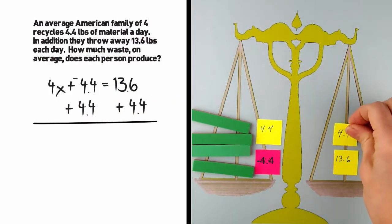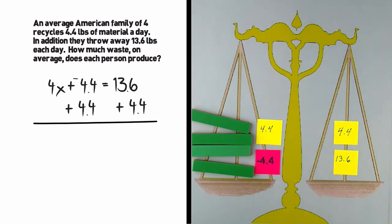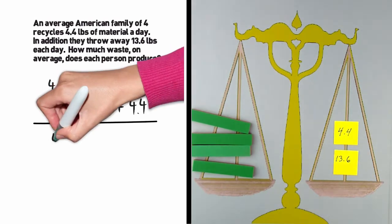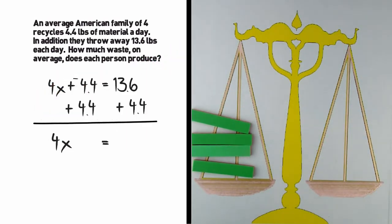And because we want to keep the scale balanced, we will be adding it to both sides. Negative 4.4 plus 4.4 is zero. And when we combine the 13.6 with the 4.4, we get a total of 18.